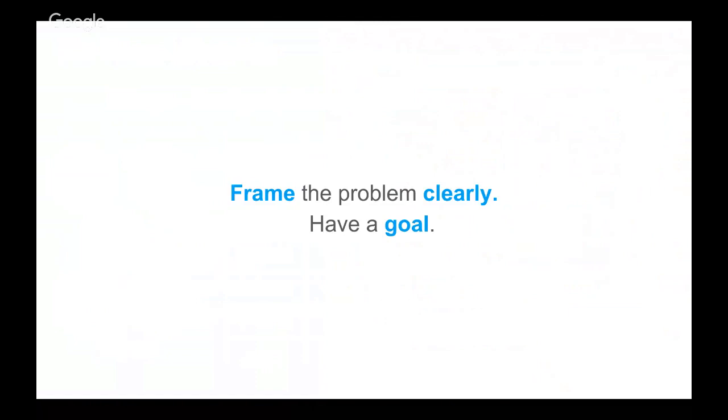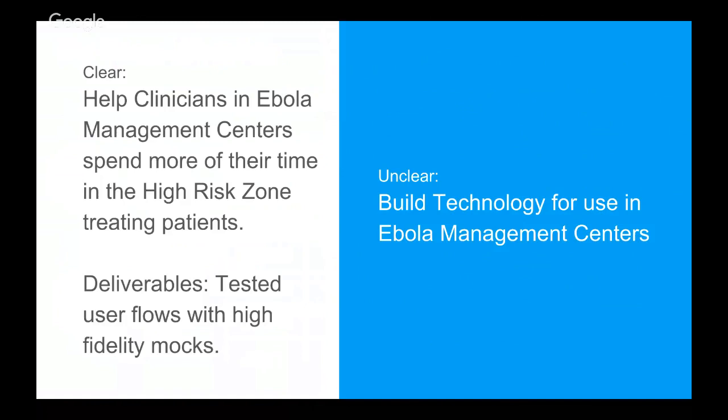Next, you need to frame the problem clearly and have a goal. The design sprint is not a magical thing that will tell you what to do with your team. You need to come into it with an actual idea of roughly what the problem space is and give a clear goal to the people taking part. A bad goal is 'build technology for use in Ebola management centers' — it doesn't really anchor you in anything. A very clear goal is 'helping clinicians in Ebola management centers to spend more of their time in the high risk zone with patients.' You can understand where to focus, what problems to analyze, and deliverables are important too — like tested user flows and high fidelity mockups.